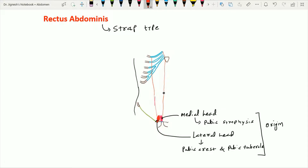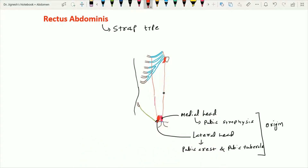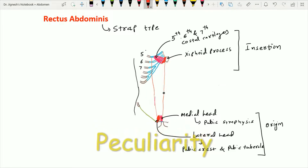The rectus abdominis muscle inserts on the upper part of the abdomen in four fleshy slips. The most medial slip inserts over the anterior aspect of the xiphoid process, while the lateral three slips insert over the fifth, sixth, and seventh costal cartilages.